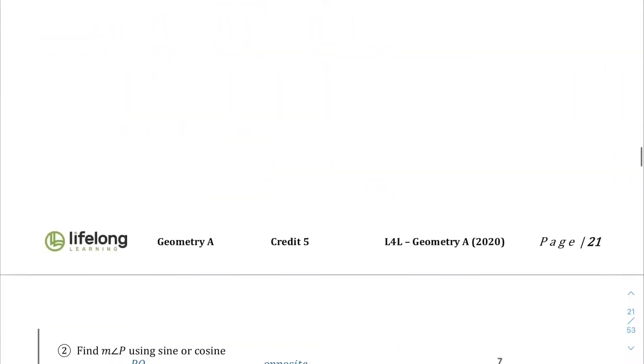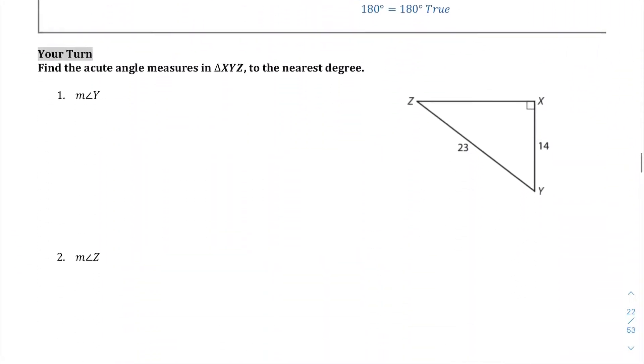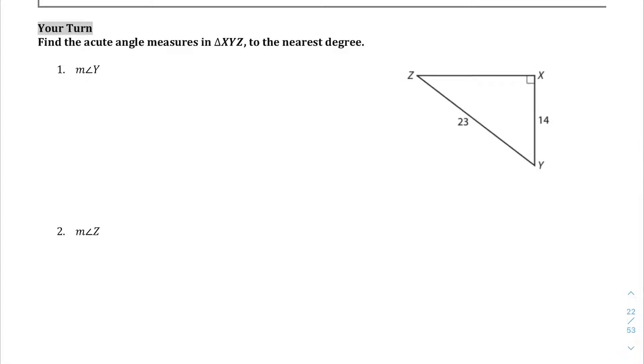So, here's the Explain 4 section. I will let you read on your own. And let's jump into Your Turn, question number 1 here. So, we're asked to find the measure of angle Y. And in this case, we have to decide what we're going to use. Are we going to use sine or cosine? And in this case, if we're looking for Y, what we are given is the adjacent side and the hypotenuse.